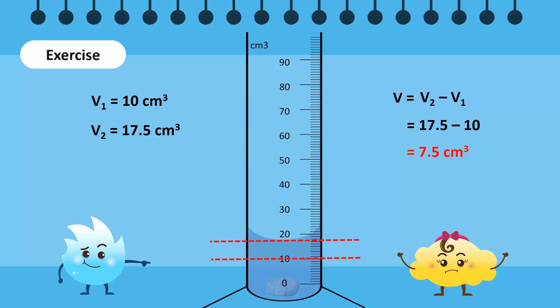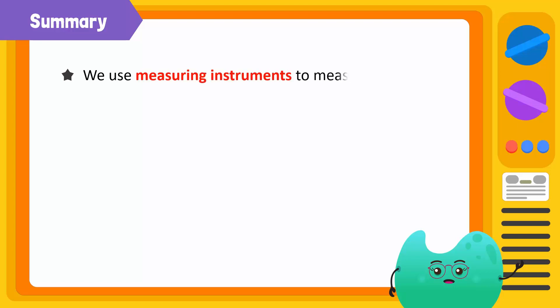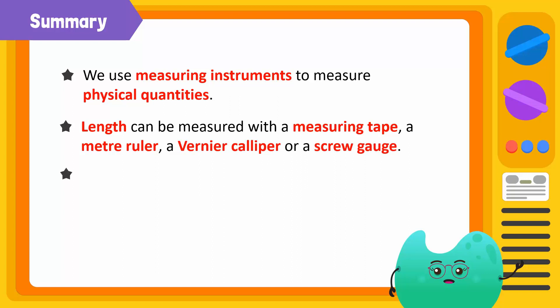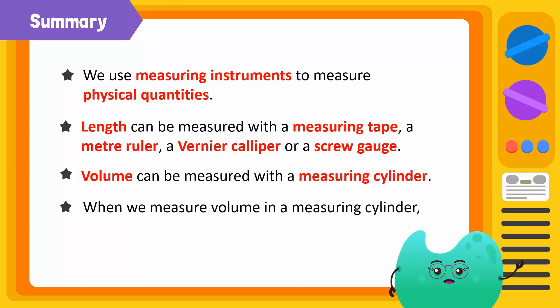Spiky's pebble has a bigger volume than Bubbles'. We've measured the length and the volume of the pebbles — Bubbles' pebble is longer, but Spiky's pebble has a bigger volume, so both pebbles are bigger in different ways. To summarize: we use measuring instruments to measure physical quantities. Length can be measured with a measuring tape, a meter rule, a vernier caliper, or a screw gauge. Volume can be measured with a measuring cylinder — always look at the bottom or top of the meniscus.